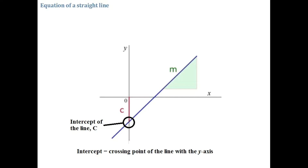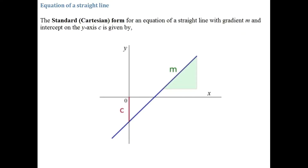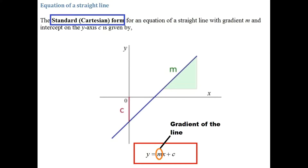Remember, intercept means the point where the line crosses the y-axis. And m denotes the gradient of a line. I did a previous video showing how the gradient is calculated, and I'll provide a link in the description below. The standard or Cartesian form for an equation of a straight line with gradient m and y-intercept C is given by y = mx + c. The coefficient of x gives you the gradient, and C is the intercept.